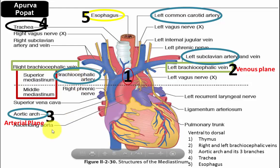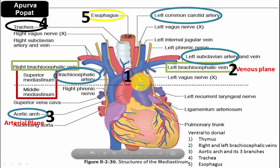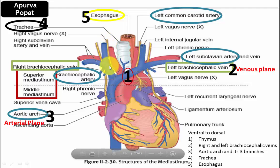Two more important structures in the superior mediastinum are the right and left phrenic nerves (root value C3, C4, C5), which innervate the diaphragm, and the right and left vagus nerves. The left vagus gives off the left recurrent laryngeal nerve, which loops around the aortic arch and provides motor supply to the intrinsic muscles of the larynx. The right vagus gives off the right recurrent laryngeal nerve, which loops around the subclavian artery.